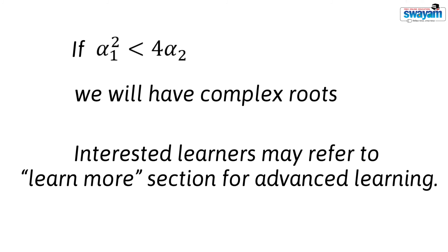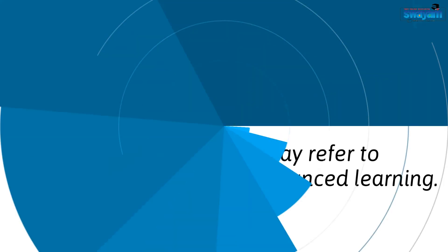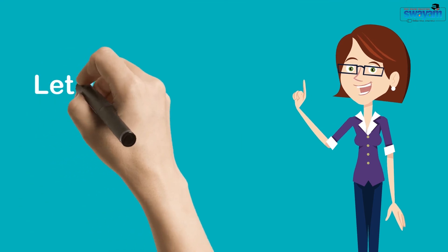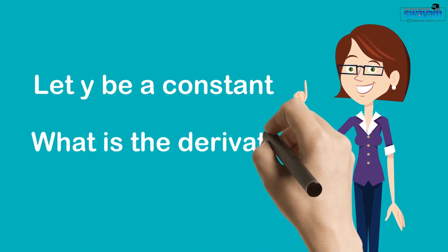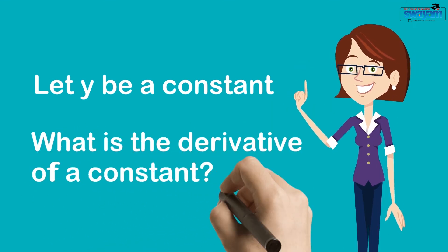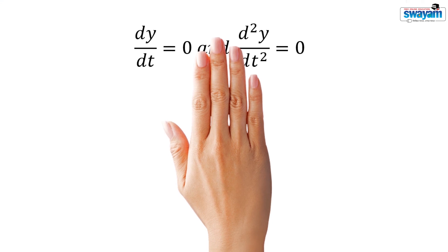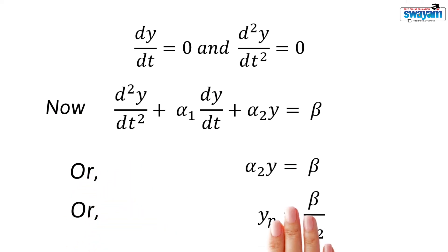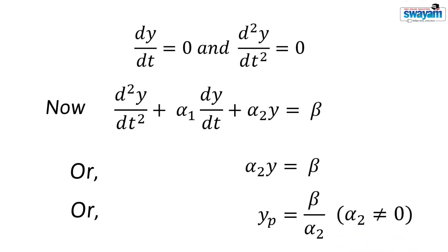We are now left with the second part of the solution. To find the particular solution, suppose y is a constant. The first derivative and second derivative of a constant is 0. Using the original equation, we get α₂·y equal to β. Simplifying further gives the particular solution as yp equal to β divided by α₂. The condition for this solution to exist requires α₂ not equal to 0.